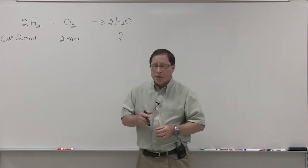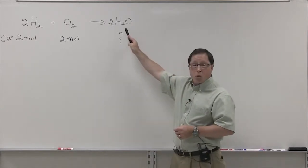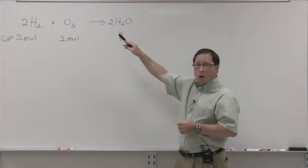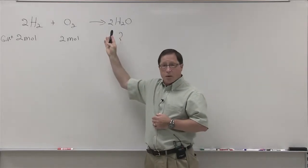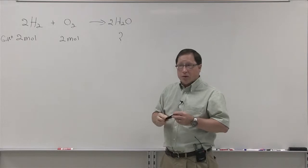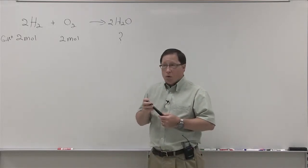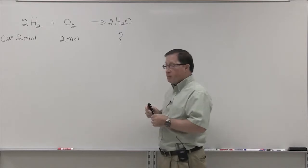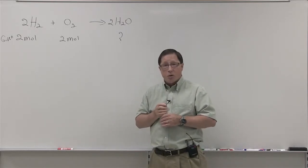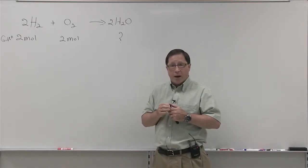So what we'd like to consider is this equation where hydrogen plus oxygen give water. The balanced equation for this is that two moles of hydrogen plus one mole of oxygen will give you two moles of water. This establishes the ratio of the products and reactants.